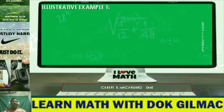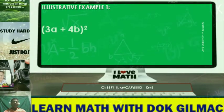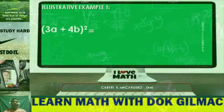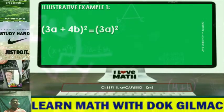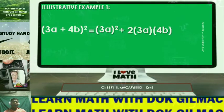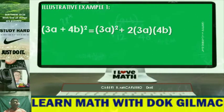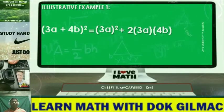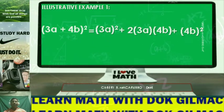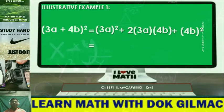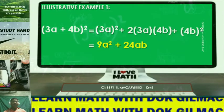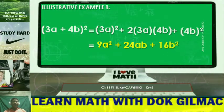Consider illustrative example number 1. Quantity 3a plus 4b squared. This is just equal to the square of the first term which is 3a plus twice the product of the first term and the second term, 3a and 4b times 2, plus the square of the second term which is 4b. Simplifying further, this is just equal to 9a squared plus 24ab plus 16b squared.